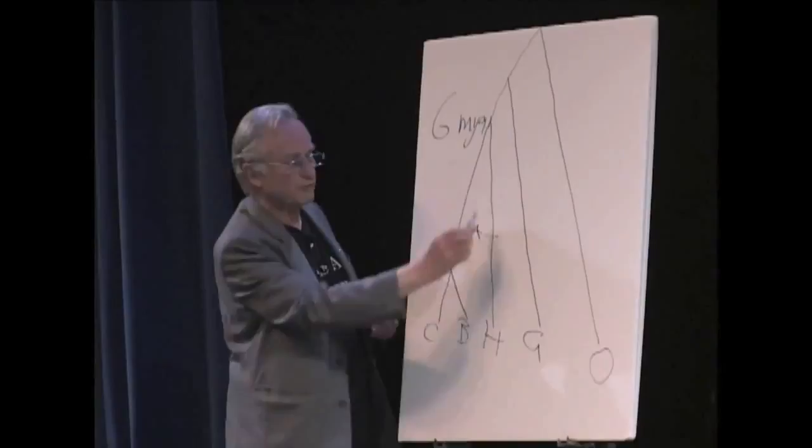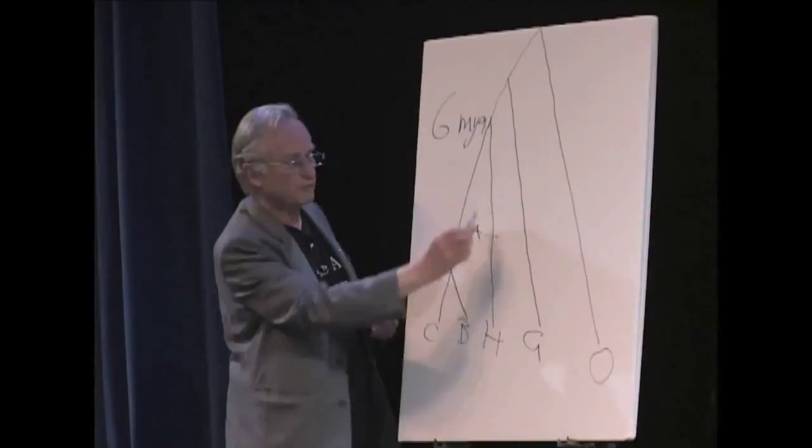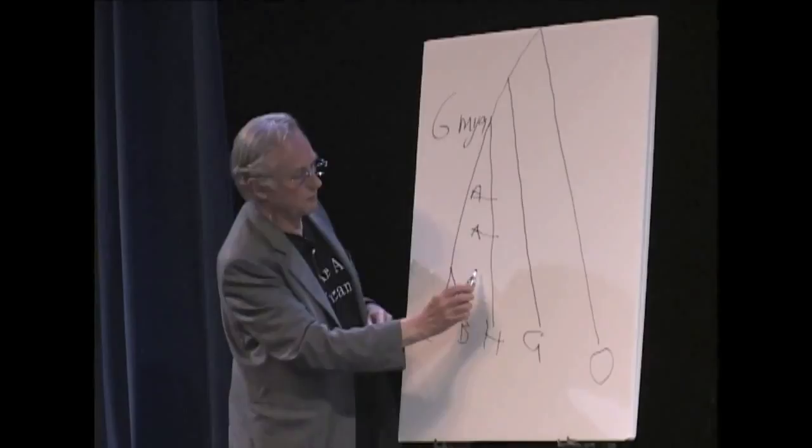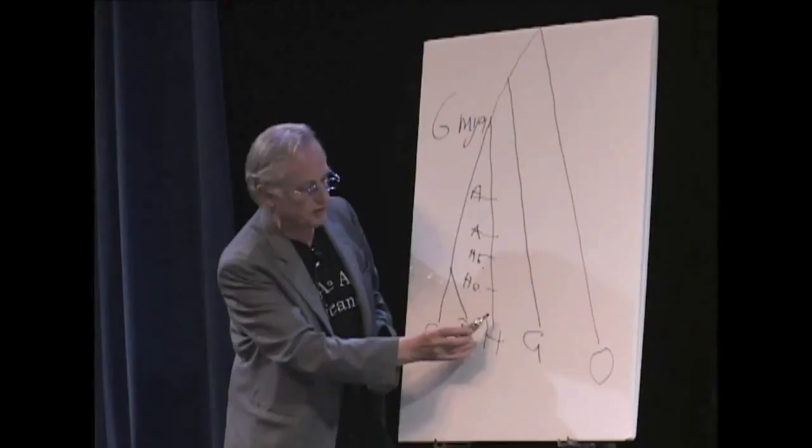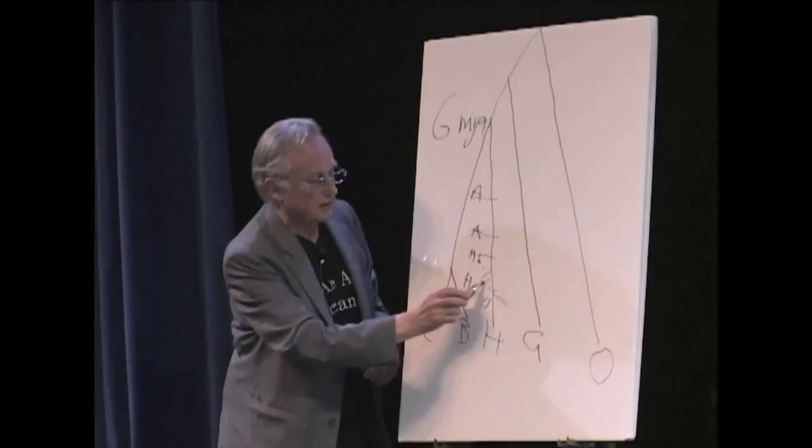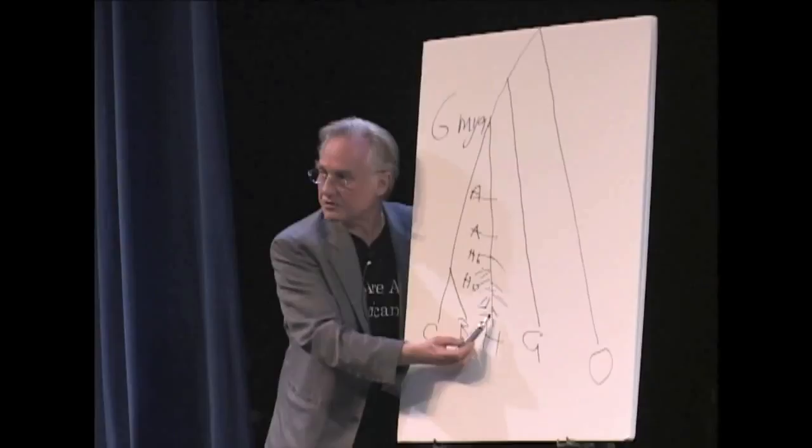We've got the genus Australopithecus sort of about halfway down, Ardipithecus there, Homo habilis there, Homo erectus about there, and then Homo sapiens—archaic Homo sapiens there, and then modern Homo sapiens there. Lots and lots of little branches are quite well documented in the fossil record here, all extinct except the last one, Homo sapiens.